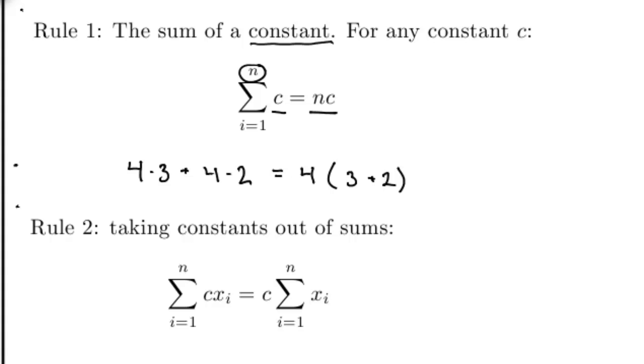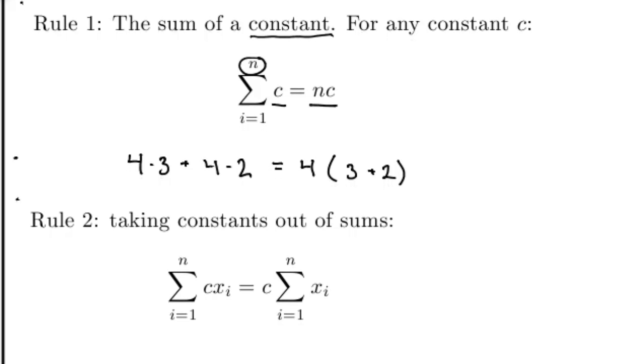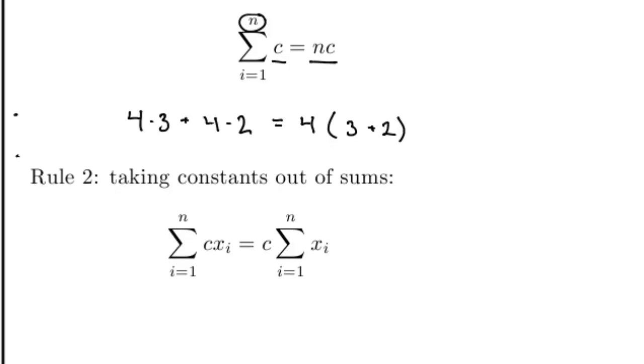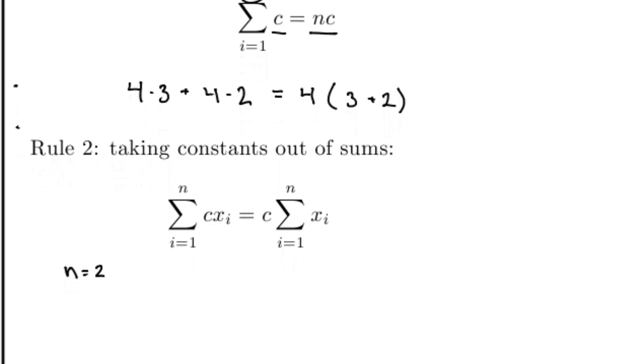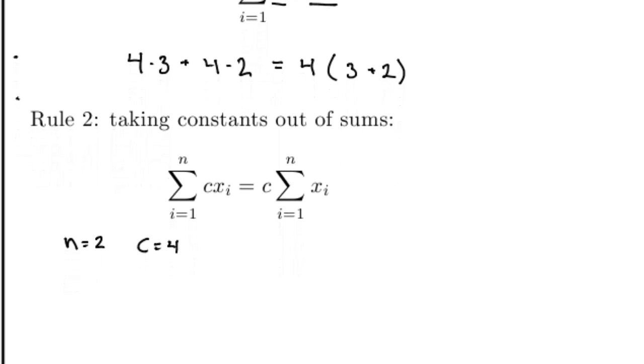Generalizing this idea, I can take constants out of sums. In the example above rule 2, I had n equal to 2, I had c equal to 4, I had x1 equal to 3, and I had x2 equal to 2.